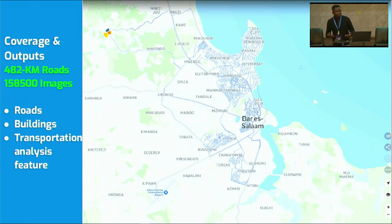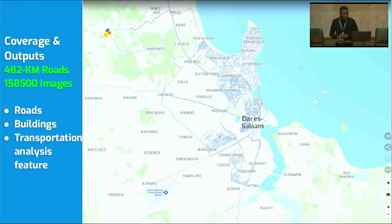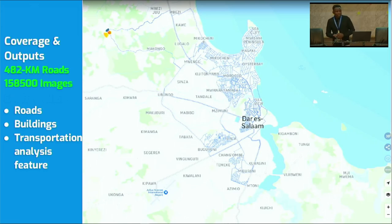We are also able to analyze buildings — from the buildings you can know the building level, building materials, and building use. And from the images acquired from the GoPro Max, it is easy to analyze transportation data including traffic signs, crosswalks, and other features.